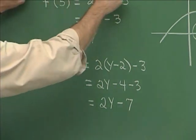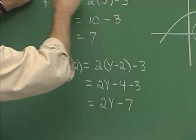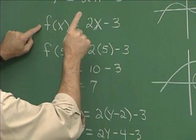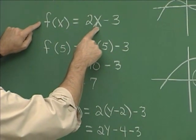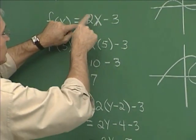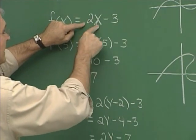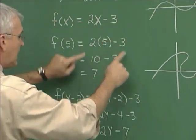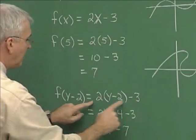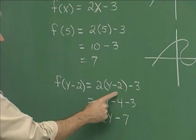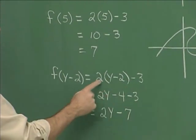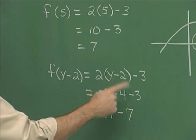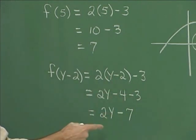Here's the f function. We're going to replace this x with y minus 2. So write 2 times y minus 2, minus 3. That's what we have here: 2 times y minus 2, minus 3. Then evaluate. 2 times those terms gives us all of this, and collecting like terms we get 2y minus 7.